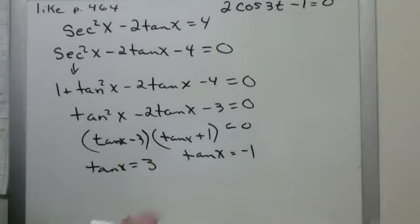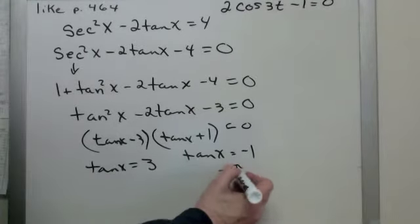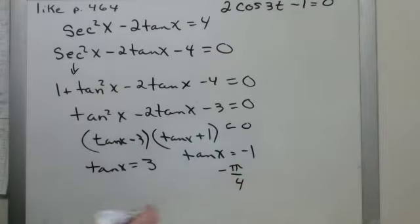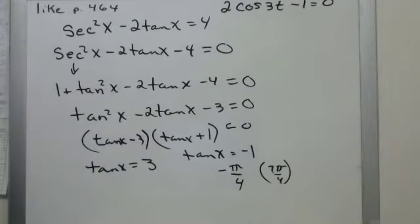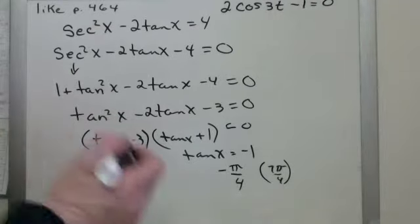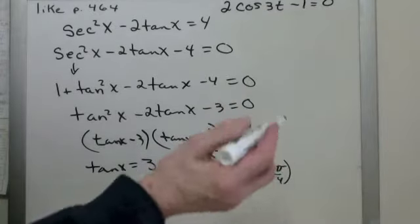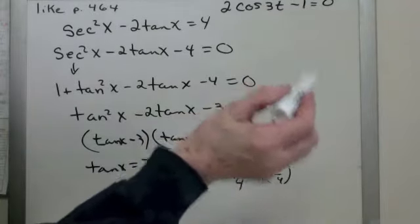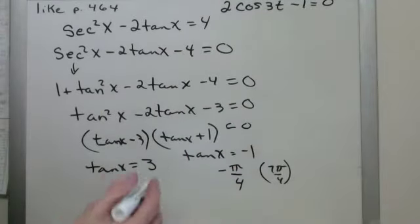And then, where does tan equal negative 1? Hopefully, you realize that it's negative pi over 4. I know that sometimes you're going to want to call that 7 pi over 4. But, you've got to call it negative pi over 4 because inverse tangents are only valid in the first and fourth quadrants, so I can't go around that way to get to the answer.